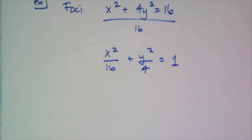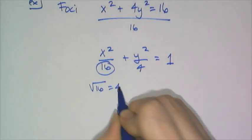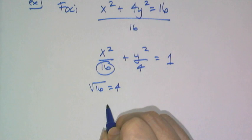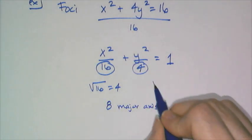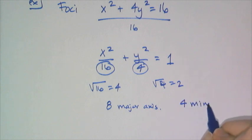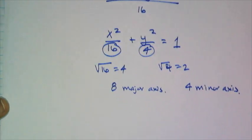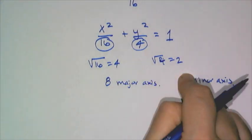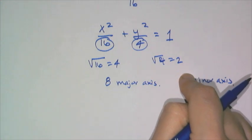Now remember, this bigger number — if I square root it and double it — I get the length of the major axis. And if I square root the smaller number and double it, I get 4 as the length of my minor axis. That helps me graph this and also tells me the extent of the graph.